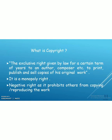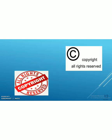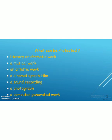Next is copyright. This is an exclusive right given to an author or a composer to print, publish, or sell copies of their original work. It is also a monopoly right — it is a negative right as it prohibits others from copying or reproducing the work. This is the symbol of copyright. Works coming under copyright include: literary or dramatic works, musical work, artistic work, cinematograph film, sound recording, photograph, and computer-generated work.